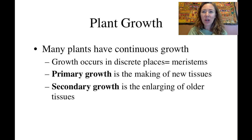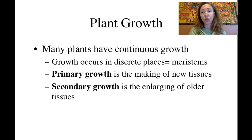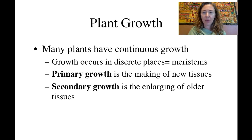In general, we talk about all types of plant growth in terms of primary growth and secondary growth — the actual creation of new tissues as plants differentiate their cells into root tissue, stem tissue, or leaf tissue, as well as the enlargement of existing tissue. When we talk about the difference between annuals and perennials in a minute, we'll be talking about the difference between primary and secondary growth — like the enlargement of existing tissue seen in rings on a tree.